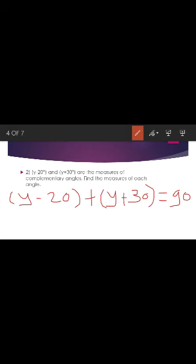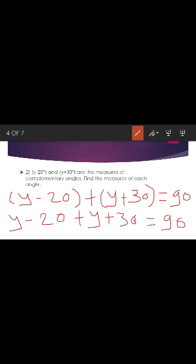First, open the brackets: y minus 20 plus y plus 30 equals 90 degrees. Find the value of y first, then put that value into y minus 20 to get the first angle, and into y plus 30 to get the second angle. To cross-check, add both angles and you should get a sum of 90.